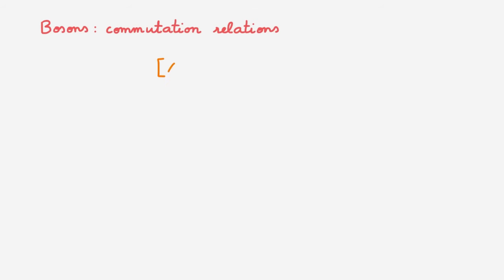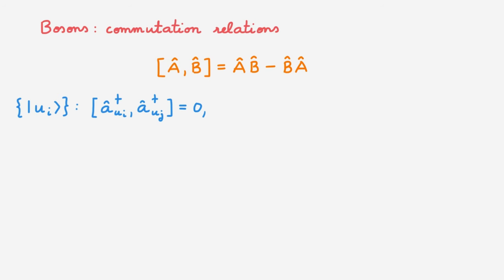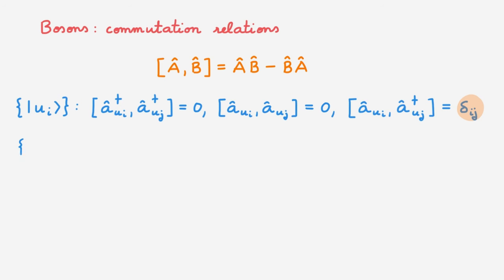Let's start with bosons, whose associated creation and annihilation operators obey commutation relations. Remember that we write the commutator of two operators A and B between square brackets, and we define it as equal to AB minus BA. For the u basis, we have that the commutator of two creation operators vanishes, that the commutator of two annihilation operators also vanishes, and that the commutator of an annihilation and a creation operator is equal to delta_ij — the Kronecker delta, which is 1 if i equals j and 0 otherwise.